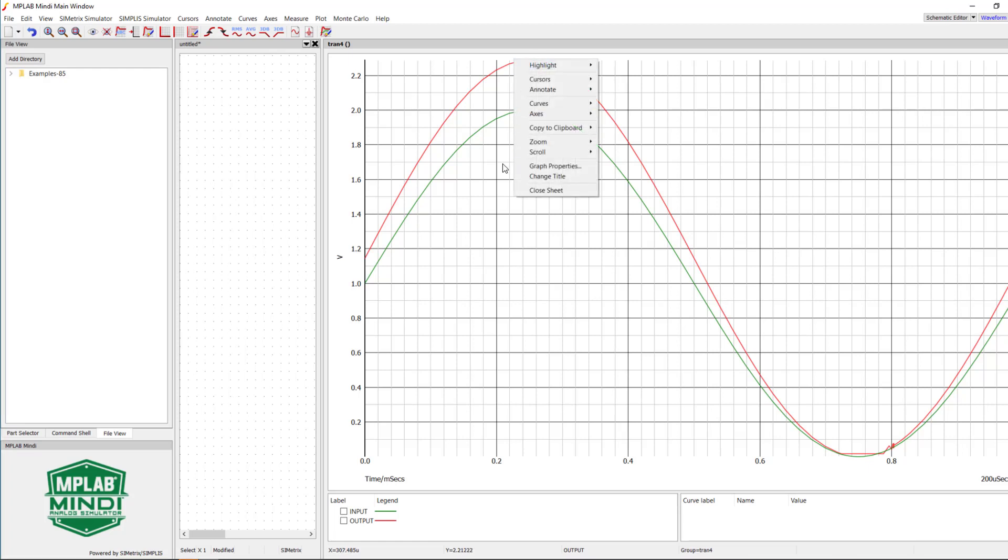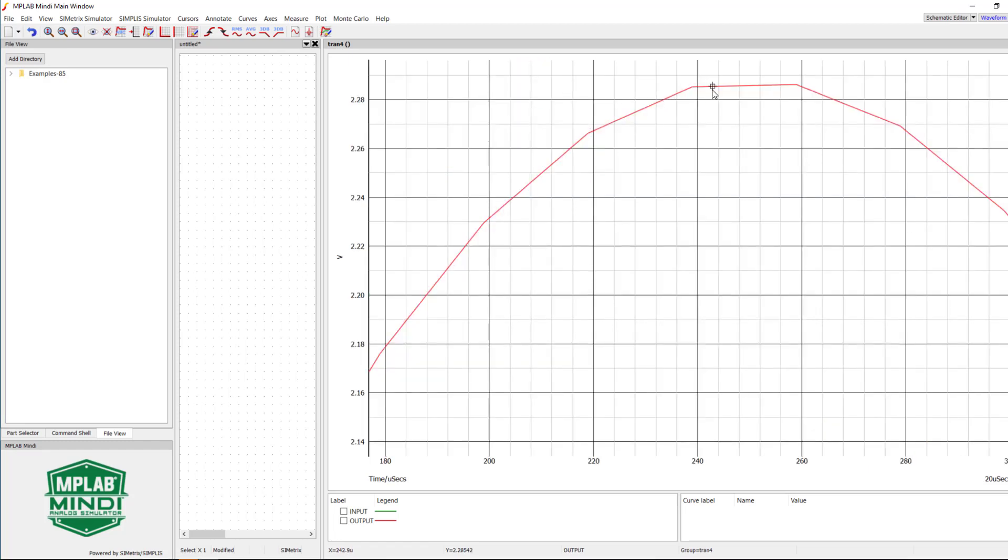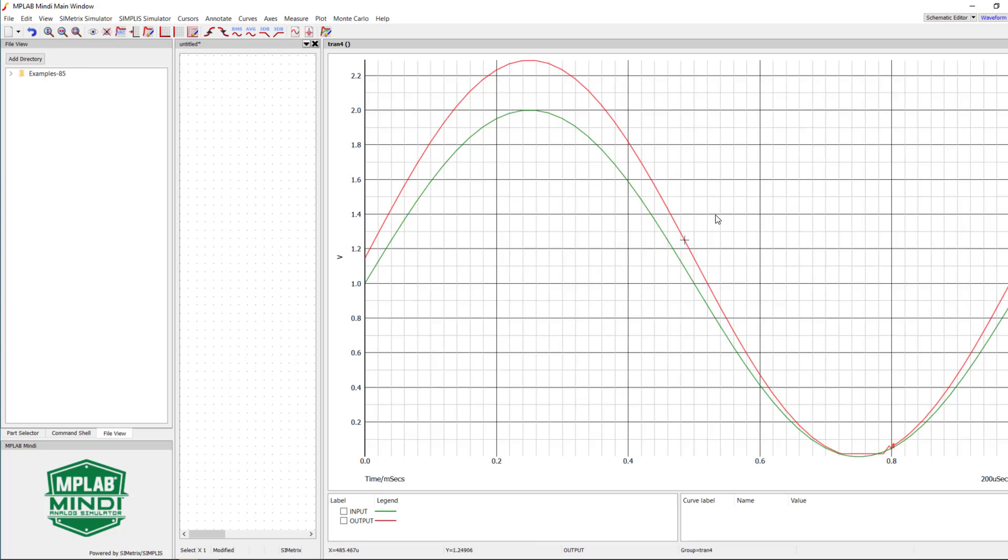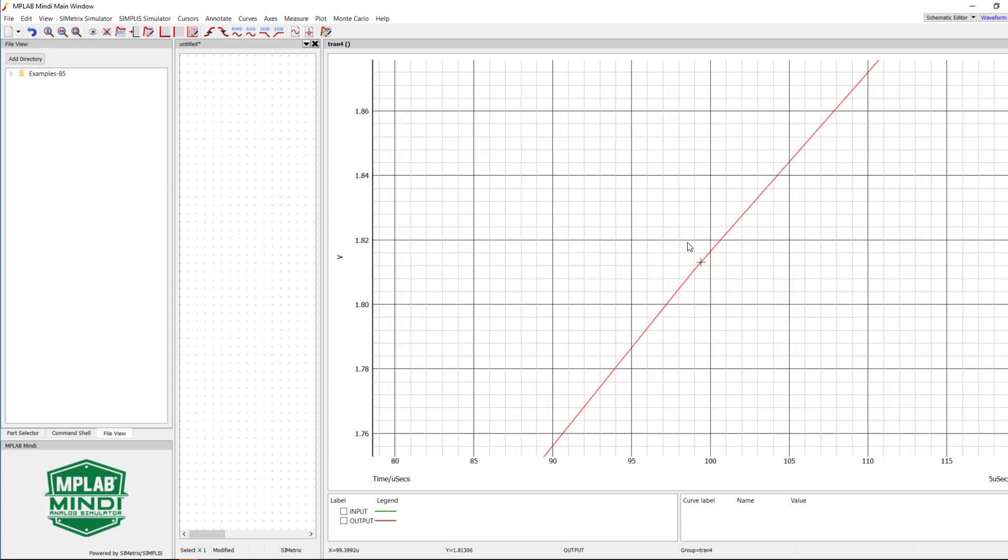Zooming into a specific area of the simulation can be done by left-clicking and selecting the area you want. Similarly, let's check when the input is 1.6 volts. 1.6 volts multiplied by a gain of 1.14 should give us an output voltage of approximately 1.82 volts, which in the simulation is accurate.